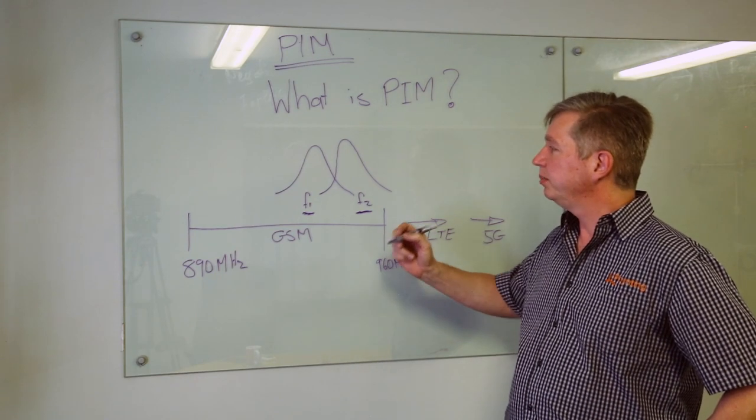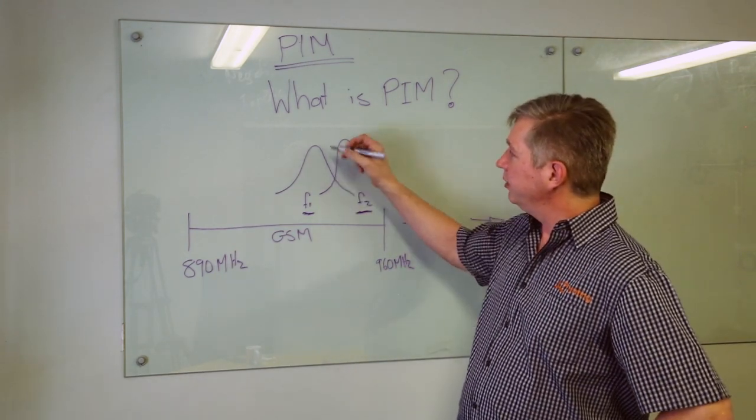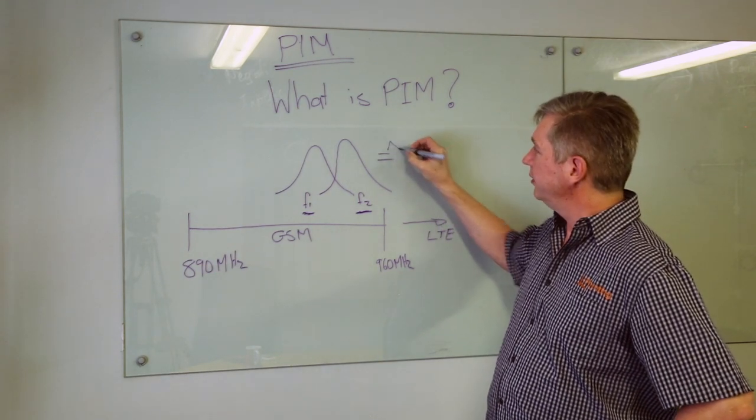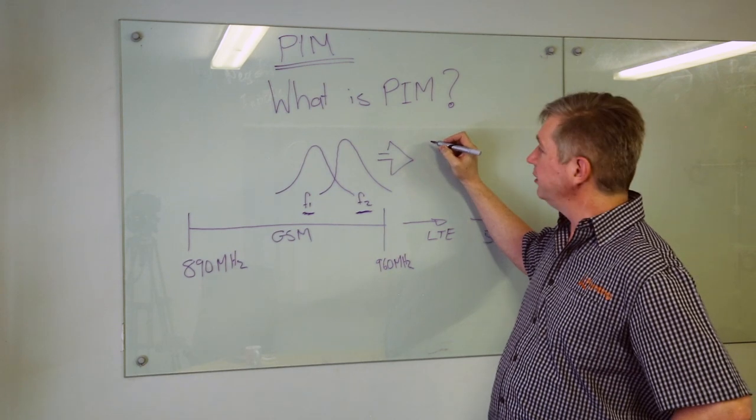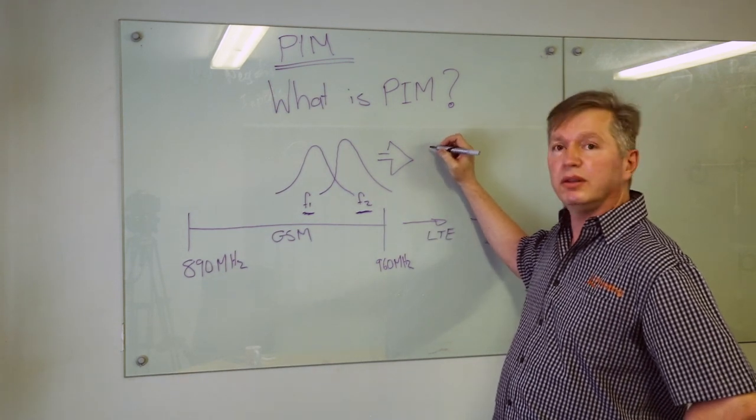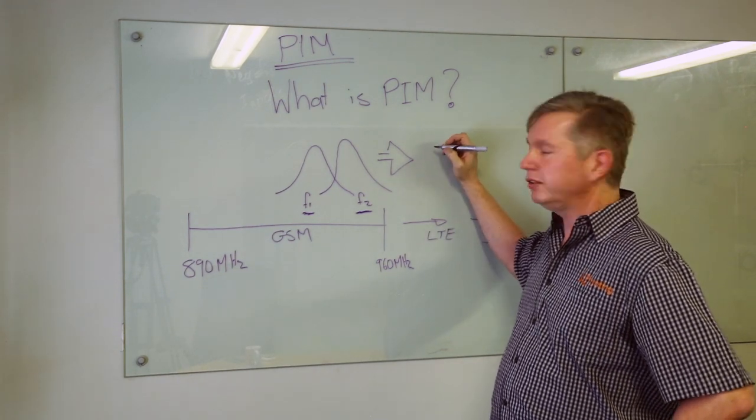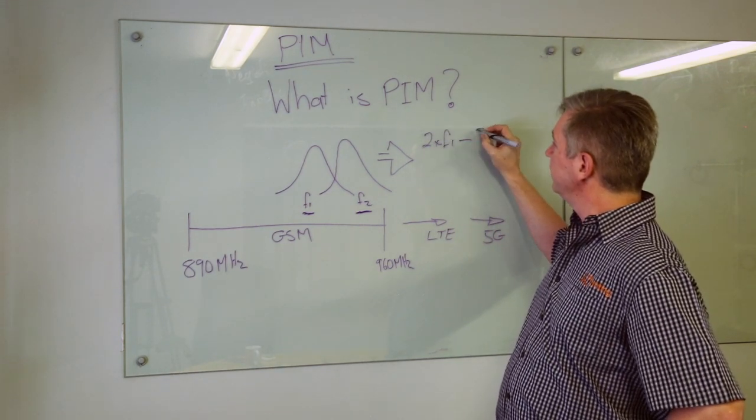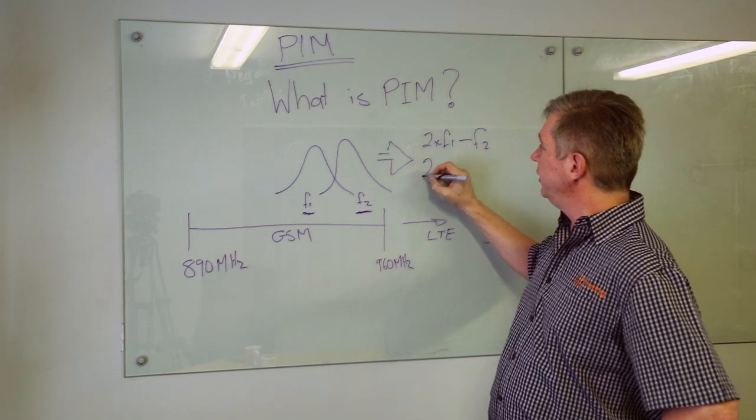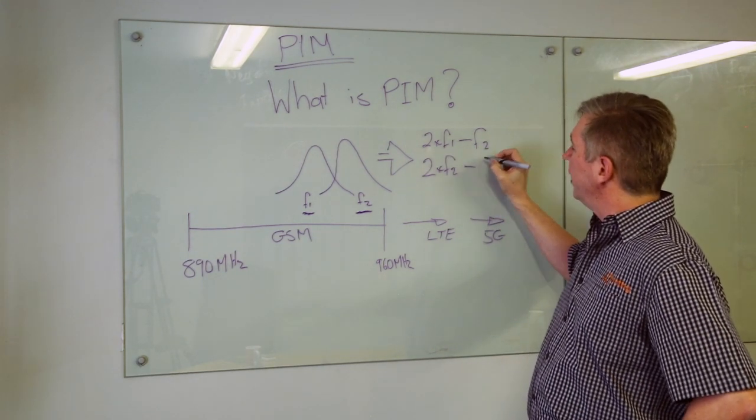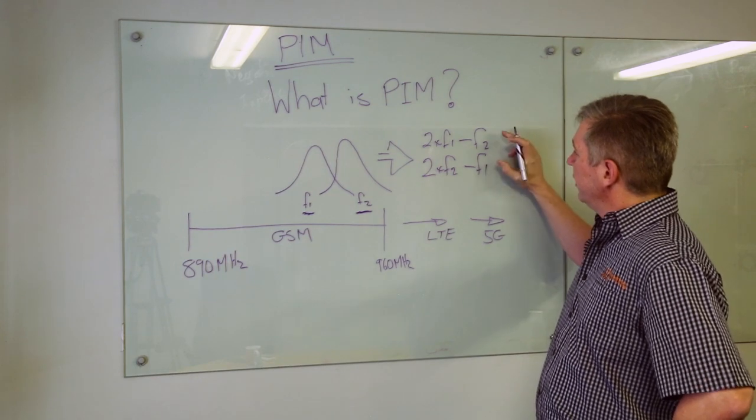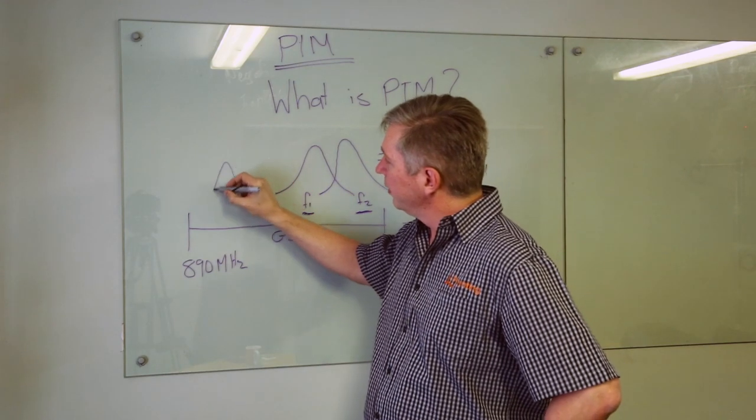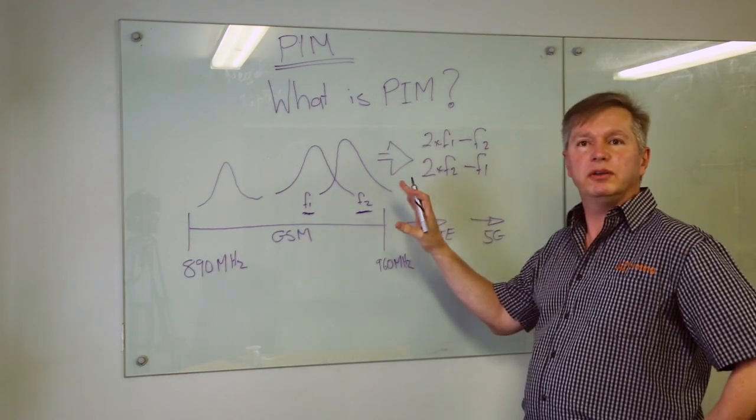What happens with PIM is that when we combine two frequency bands, we have a product of this which results in a combination of the two frequencies. For example, the third order modulation in this case would be two times frequency one minus frequency two, or it could be two times frequency two minus frequency one. The result of this is that a different product is created which ends up somewhere else in the frequency band.